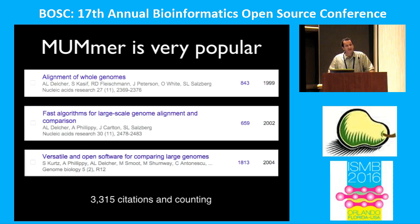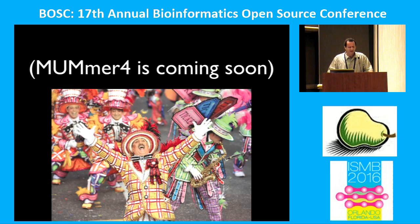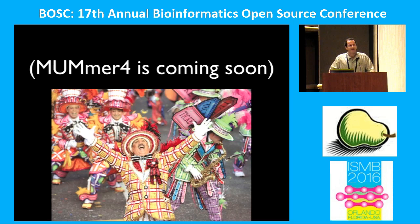Mummer has been very popular and useful, with over 3,300 citations over the years. That's the currency we work in — citations. We're happy people are using the software and incorporating it into other packages. Even though it was first developed in 1998, it's still very actively used; a lot of citations are recent. The main usage today is for comparing different assemblies to one another. Mummer 4 is coming soon, and that'll be on GitHub. There's actually a thing called the Mummer's Parade every year in Philadelphia where people dress up in colorful costumes — it has nothing to do with our software.